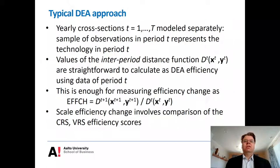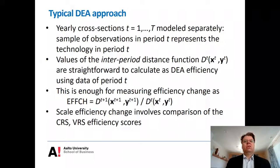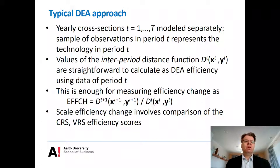This is enough for measuring efficiency change. For a given unit — say a country or firm — we can see what the efficiency score was in period T and in period T+1. The efficiency change component is simply the ratio of these efficiency scores: the score in period T+1 divided by the score in period T. Similarly, we can calculate scale efficiency by comparing constant returns to scale and variable returns to scale efficiency scores, and then take the ratio to see how much scale efficiency has changed.